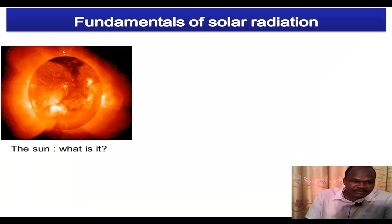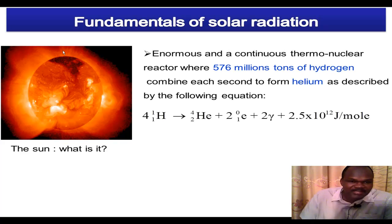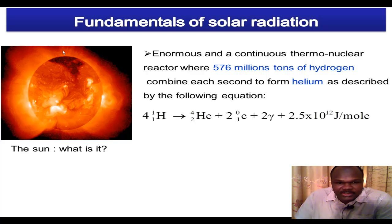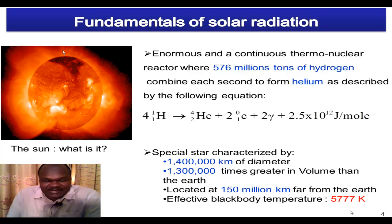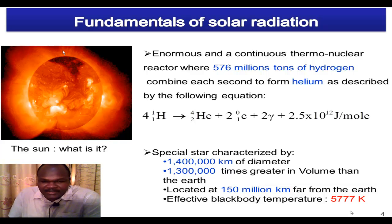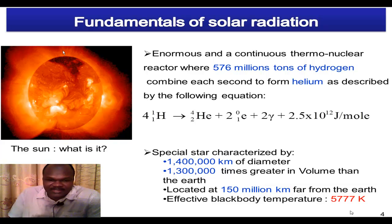Fundamentals of solar radiation. The sun — what is it? The sun is a thermonuclear reactor where you have about 600 million tons of hydrogen being combined each second to form helium, as described by the following equation. It's a special star. The diameter is about 1,400,000 kilometers, and its volume is about 1,300,000 times greater than the volume of the earth. It is located at about 150 million kilometers from the earth — that's the average, the mean distance. And its effective black body temperature is about 6,000 Kelvin.